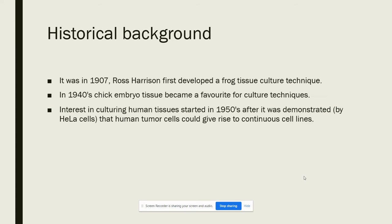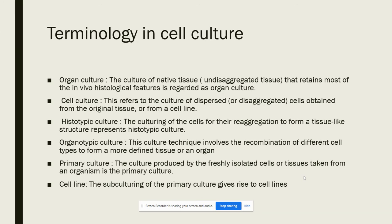Regarding historical background: in 1907, Ross Harrison first developed a frog tissue culture technique. He chose frog because of its regeneration capacity in tissue. In the 1940s, chick embryo tissue became a favorite for culture techniques. Interest in culturing human tissues started in 1950 after it was demonstrated that human tumor cells could give rise to continuous cell lines.